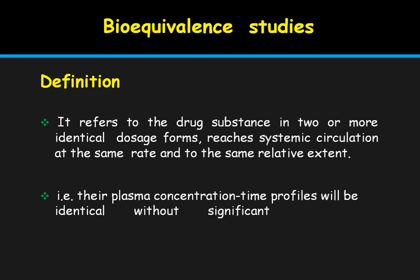The plasma concentration-time profile will be identical without significant statistical differences. The rate of entry of the drug into systemic circulation should be the same and show the same plasma concentration-time profile. For example, if one dosage form has a half-life of three hours, the second should also have the same half-life, and both drugs should remain within the therapeutic level for the same fixed period of time.